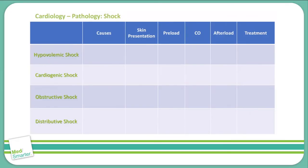Let's continue on and discuss various types of shock. We will discuss hypovolemic shock, cardiogenic shock, obstructive shock, and distributive shock. With each type of shock, we want to cover the causes, how they present, what various physiologic effects are occurring, and finally we'll cover treatments.